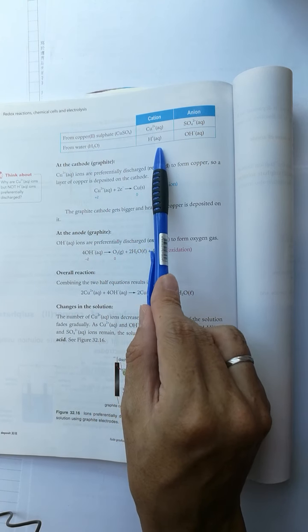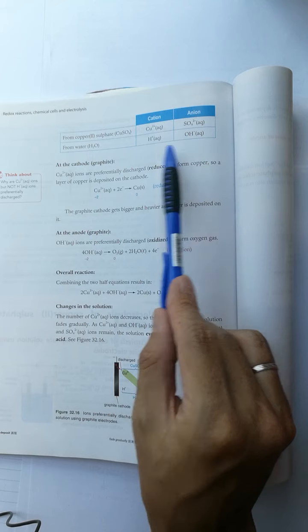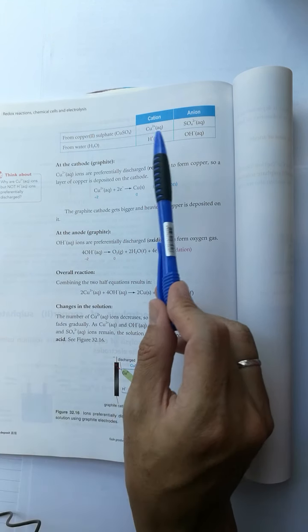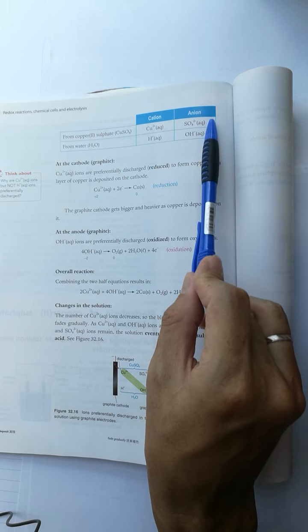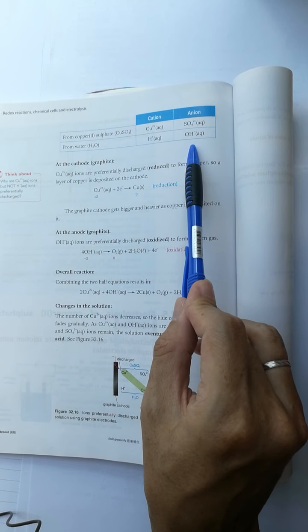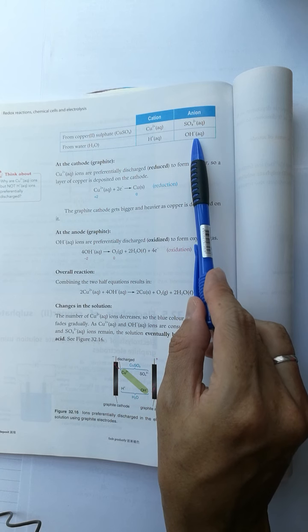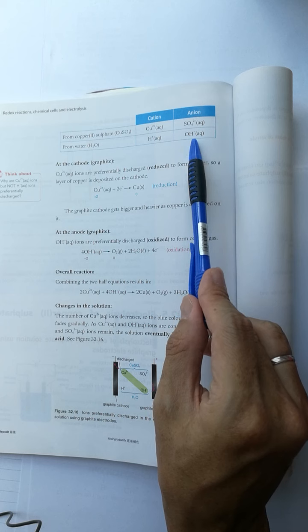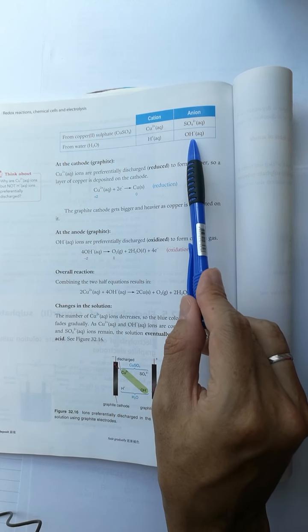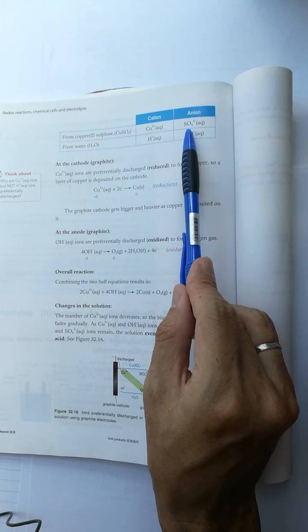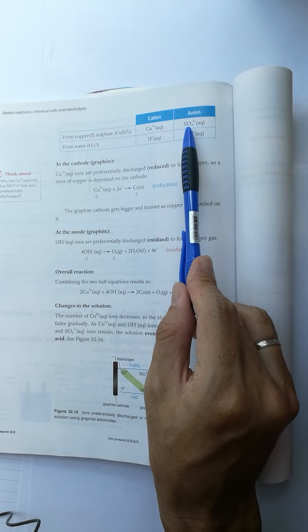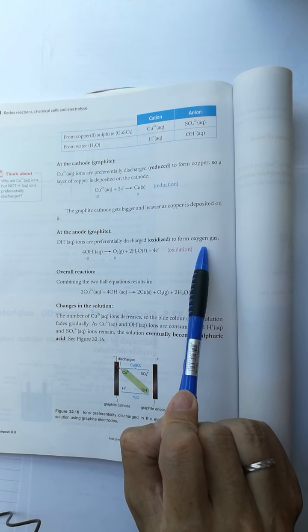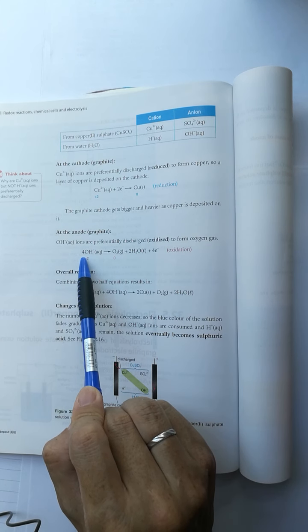For the anions, they both go to the positive electrode. The hydroxide ion is a stronger reducing agent than the sulfate anion, so the hydroxide ion is preferentially discharged according to the equation.